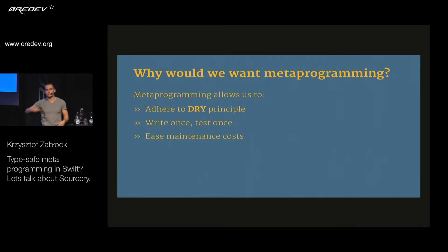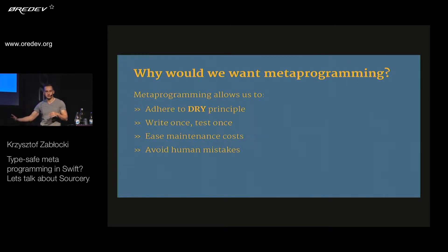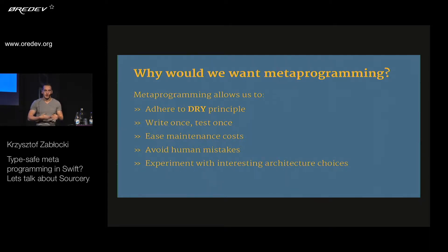Once it's written, when you add or remove a variable, all the boilerplate is automatically updated for you — a huge benefit because you don't have to remember about all those different boilerplate use cases in your project. It also avoids human mistakes and allows you to experiment with interesting architecture choices, because once you remove the cost of maintaining boilerplate, you can actually come up with safer code. For example, in Swift, typed identifiers — phantom types — gain some traction, but there's a lot of boilerplate around that.